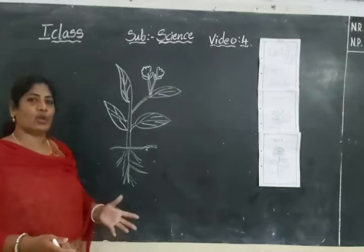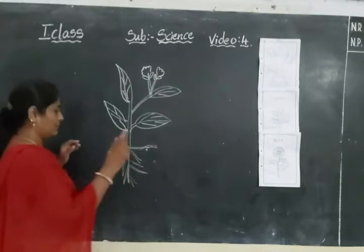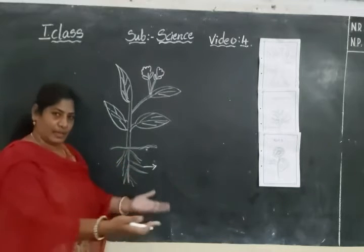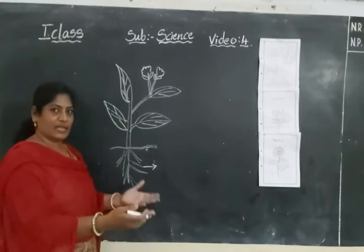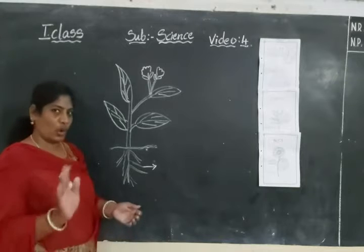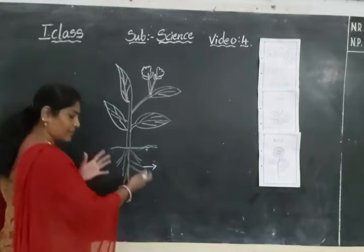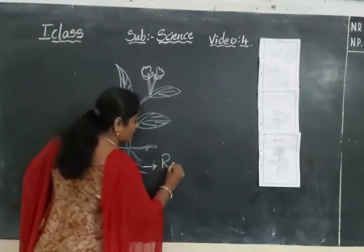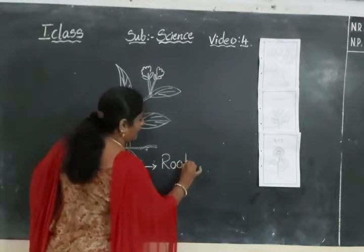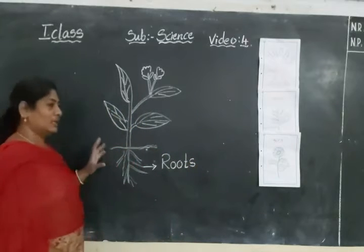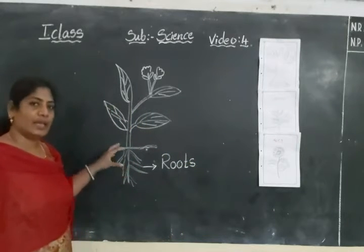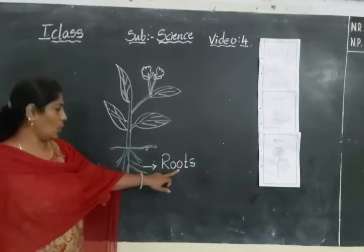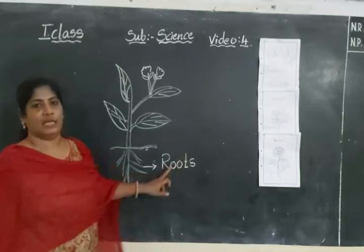First of all, what is a plant? These are roots. Where does the plant live? The plant lives in soil. This is the roots of a plant. The roots will be fixed in the soil. These are the roots. R-O-O-T-S. Roots.